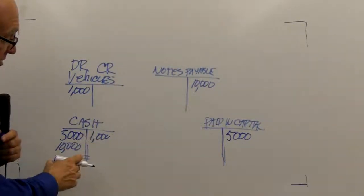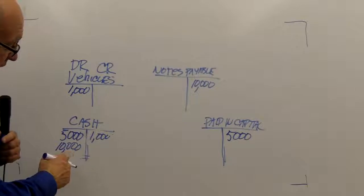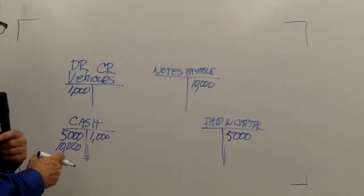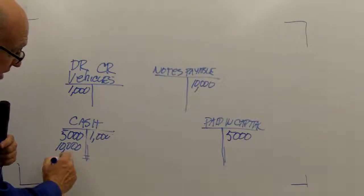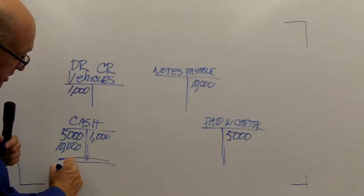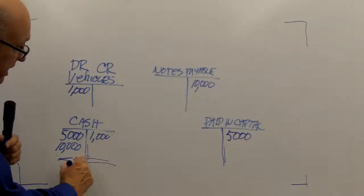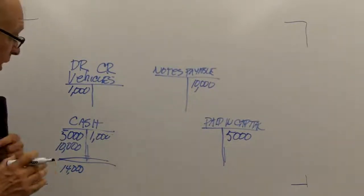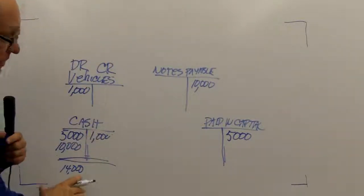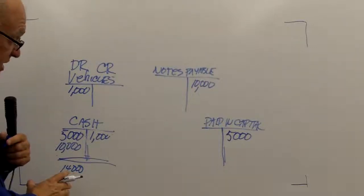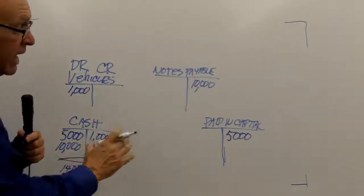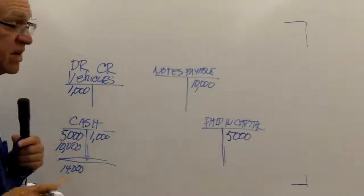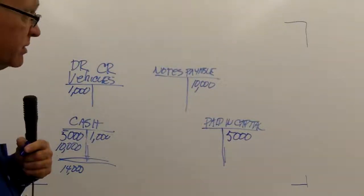Remember we talked about the balance of an account? Here's my cash account. I have $15,000 of debits, $1,000 of credits. The balance in that account, if I were to just summarize it here, is $14,000. And if I look very quickly, my assets, I have $15,000 of assets, which is $14,000 cash and a $1,000 vehicle. And I have $15,000 of liabilities and owner's equity.